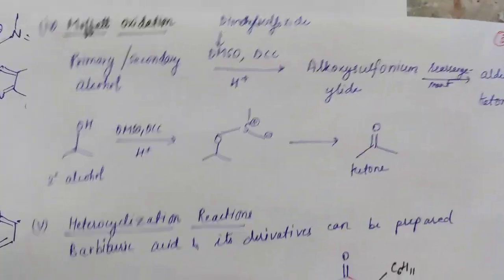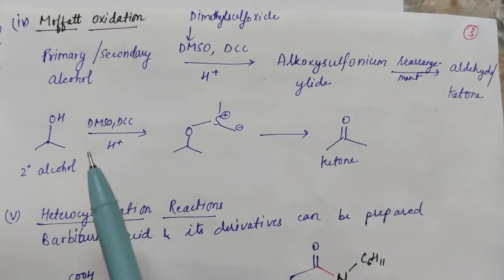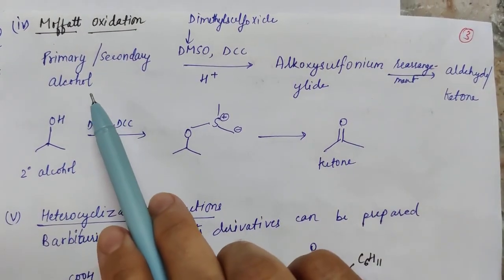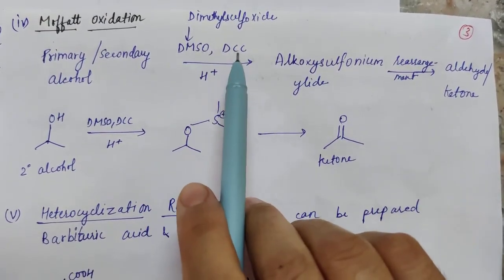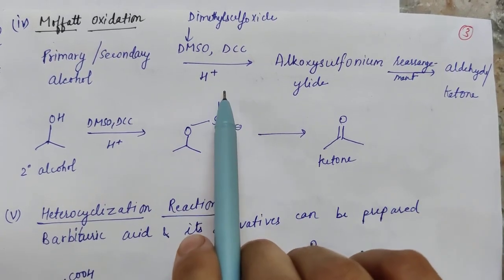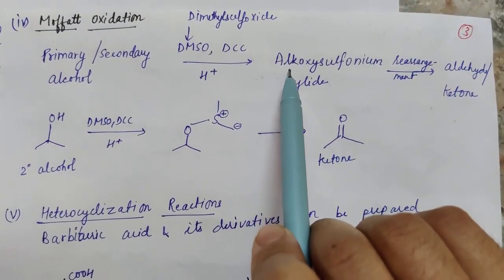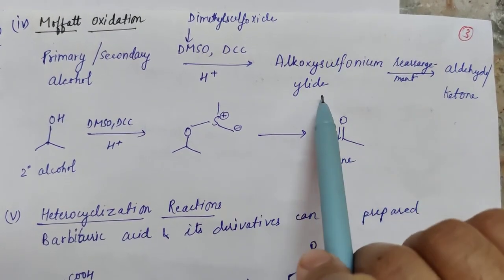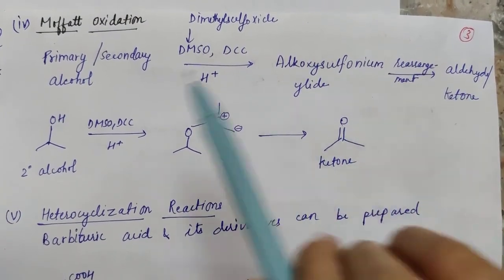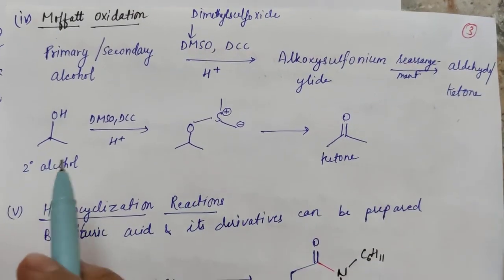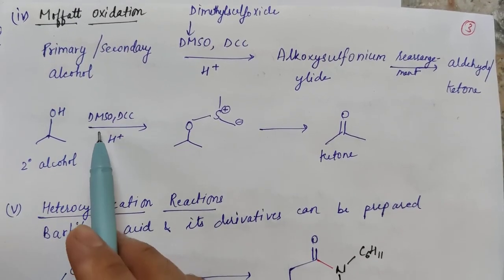The fourth reaction is Moffat oxidation. A primary or secondary alcohol, in the presence of two reagents — dimethyl sulfoxide and DCC — under acidic conditions gives an aldehyde or ketone. This proceeds via alkoxysulfonium ylide formation followed by rearrangement. A primary alcohol gives an aldehyde; a secondary alcohol gives a ketone.